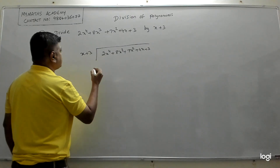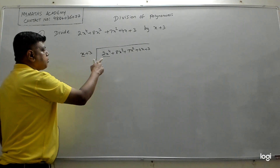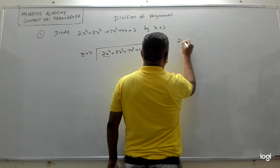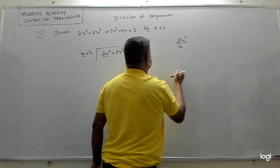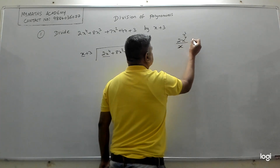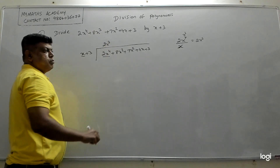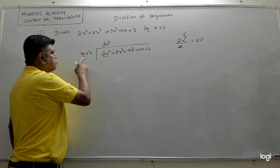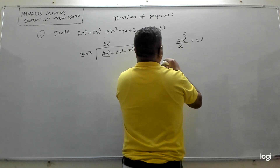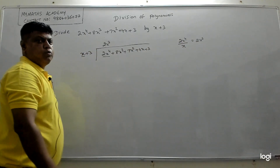The first step is to take the first term of the dividend by the first term of the divisor. The first term of the dividend is 2x⁴, divided by x. So 2x⁴ ÷ x — the x cancels and you get 2x³. Write that 2x³ in the quotient.